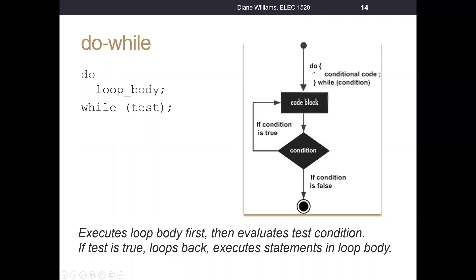We're going to have the keyword do, then curly brackets. Inside the curly brackets is the code we call the loop body — that's what we want to execute inside the loop — and then the keyword while, and then the test outside. The flow of control is: the block of code inside the body executes, then it checks the test condition. As long as the test condition is true, it loops back up and executes the same block again, until the test condition is false, and then execution continues to the next line of code.